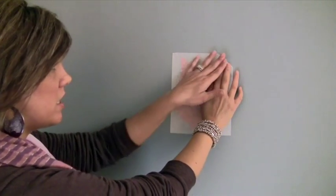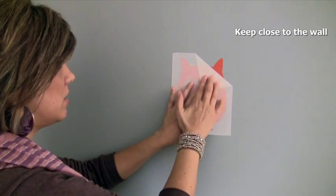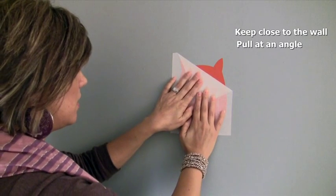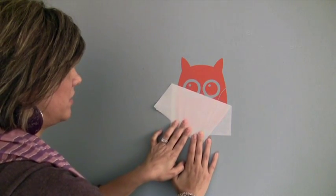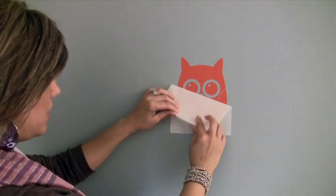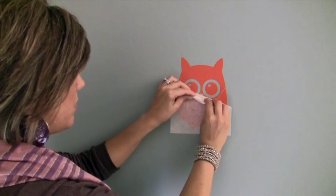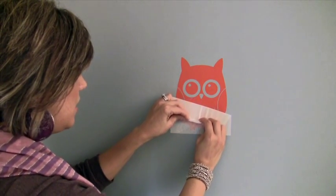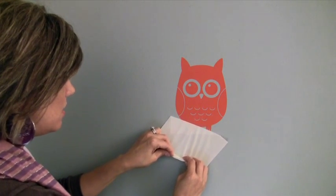Again, just like the backing paper, keep it really close. I just pull it slightly at an angle, keeping my fingers on the wall and smoothing it off. And if you have a larger piece, you can wad up your paper and get a better grip. And just keep peeling at an angle until you reveal the entire decal.